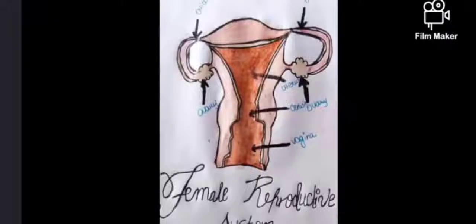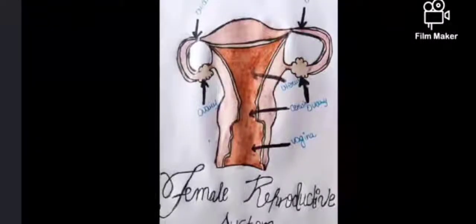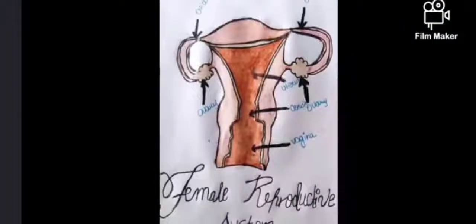The female reproductive system comprises two different parts: the primary or necessary reproductive system, and the accessory reproductive system. The primary reproductive system consists of ovaries, while the accessory parts are a pair of oviducts, uterus, vagina, and vulva.